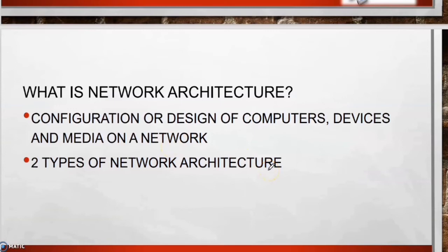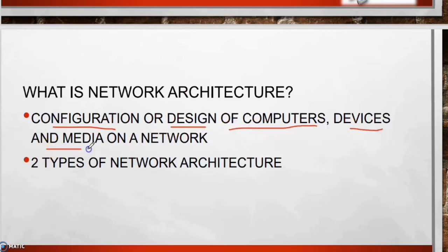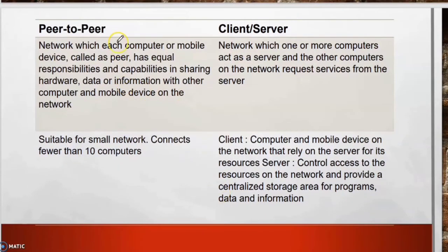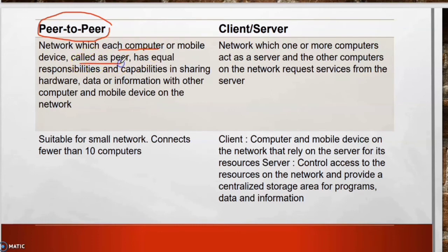Next, we continue with network architecture. Network architecture is a configuration or design of computers, devices, and media on a network. Remember the keyword: configuration or design of computers, devices, and media on a network. There are two types: first, peer-to-peer network — each computer or mobile device is called a peer because it has equal responsibilities and capabilities in sharing hardware, data, or information with other computers and mobile devices on the network.